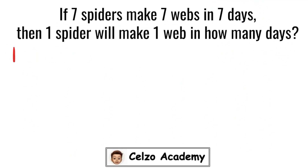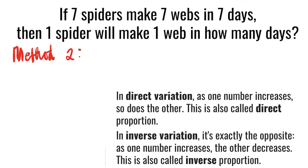Now let's look at method 2 using algebra. This problem involves direct variation and inverse variation. The number of spiders is directly proportional to the number of webs, because as the number of spiders increases, the number of webs they make also increases. On the other hand, the number of spiders is inversely proportional to the number of days — if there are more spiders working, it takes fewer days to make a web.